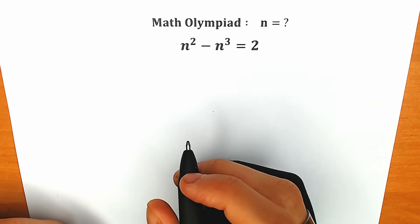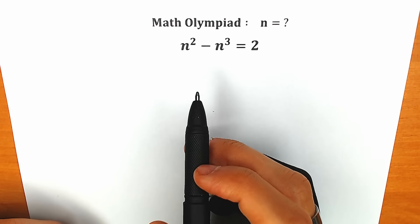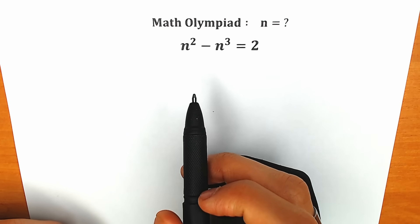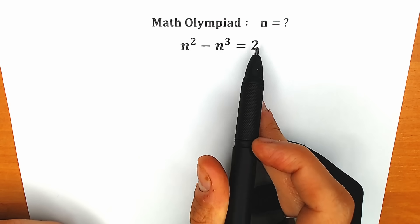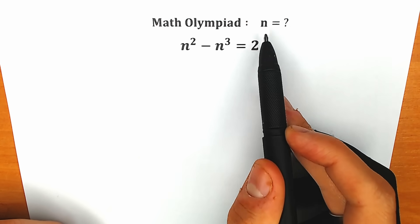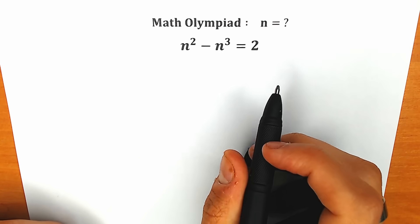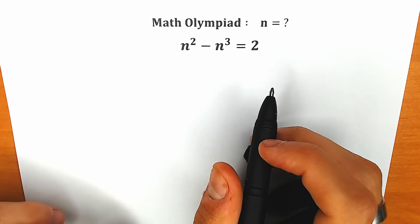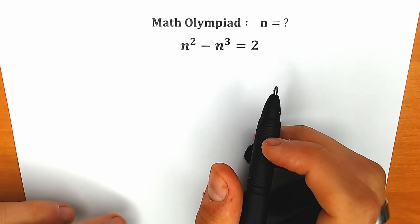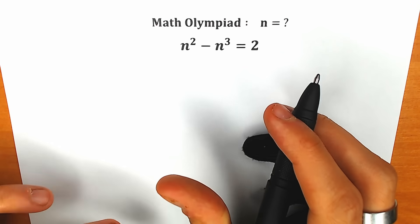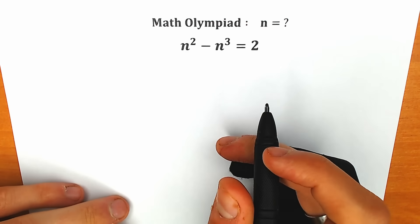Hello everyone! Happy to see you here. Welcome back to my channel Higher Mathematics. Today we have a very interesting equation: n-squared minus n-cubed equals 2. We need to solve this equation for n, so if you have your answer or assumption, you can write it in the comments below, and then we will check your answer. It will be really interesting to exchange our information at the end of the video.